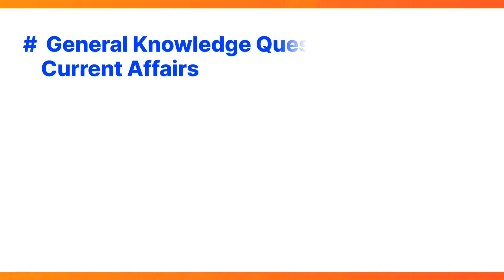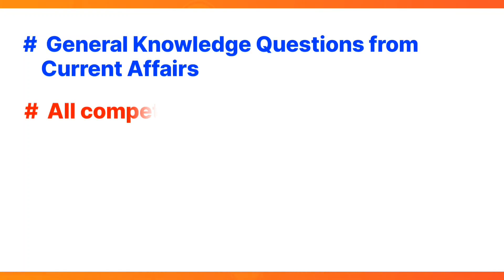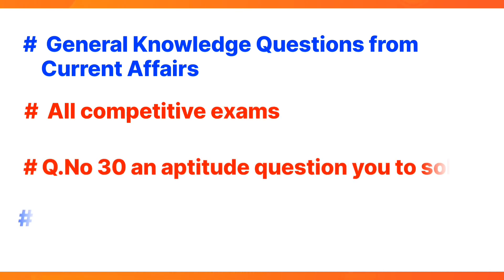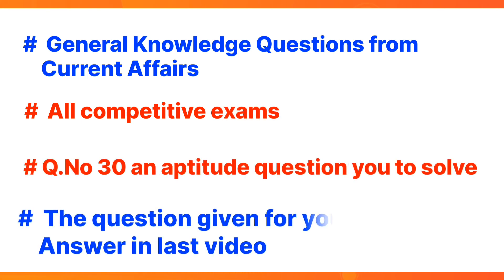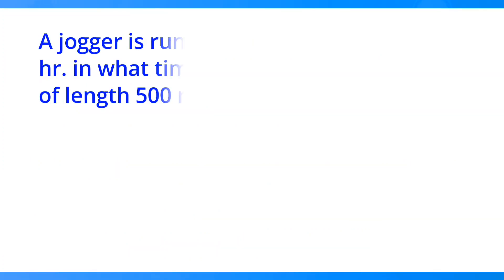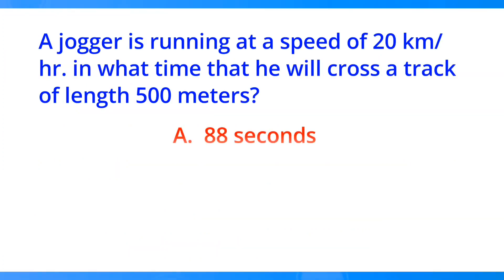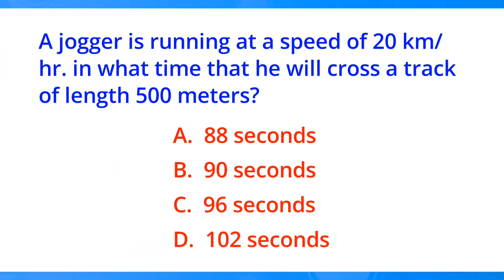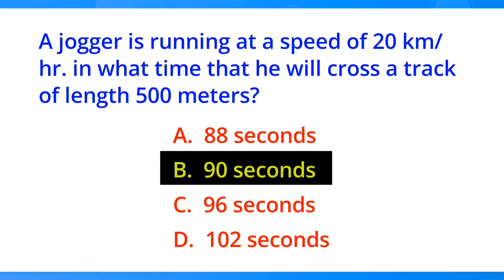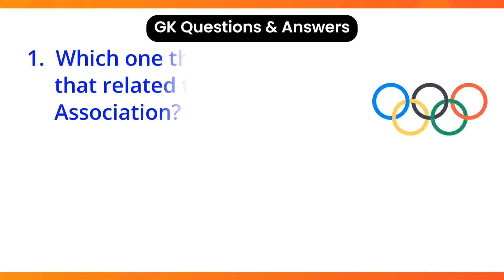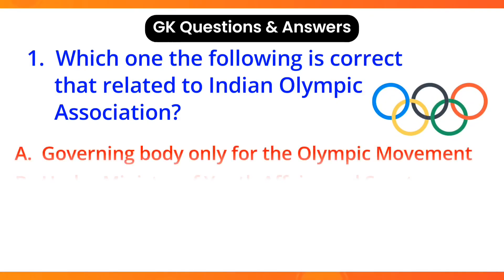Hello guys, these are general knowledge questions from current affairs related to all competitive exams, question number 30. An aptitude question for you to solve: a jogger is running at a speed of 20 kilometers per hour. In what time will he cross a track of length 500 meters? Answer: option B, 90 seconds.